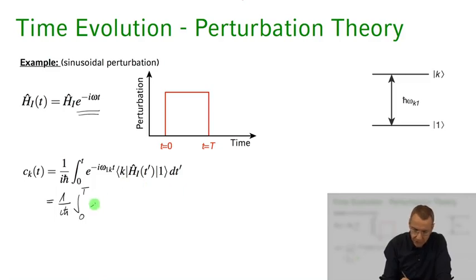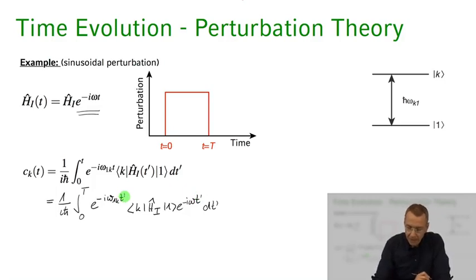But let me first write it out explicitly minus i omega 1 k t k H i 1 e to the minus i omega t dt prime.